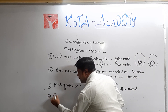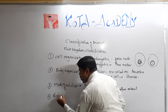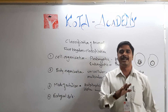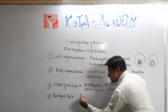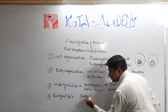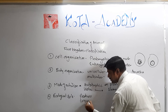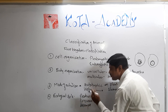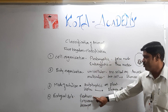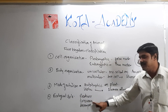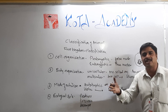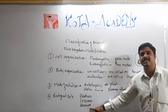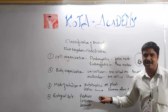The fourth criteria is ecological role — whether the organisms are producers, consumers, or decomposers. Producers are like plants; consumers include herbivores and carnivores; and decomposers break down dead organic matter. Thank you.